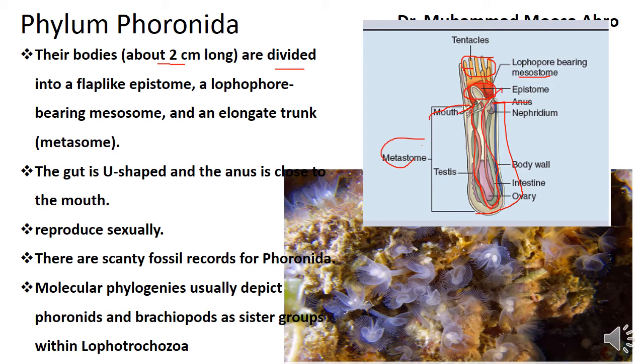Reproduction is sexual. They have sexual reproduction, but they are hermaphrodite — they have ovaries as well as testes.